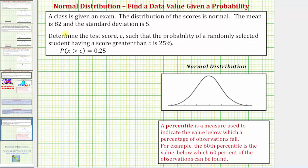In this example, a class is given an exam. The distribution of the scores is normal. The mean is 82, and the standard deviation is five.